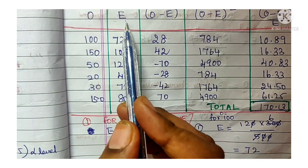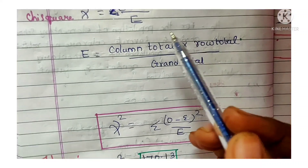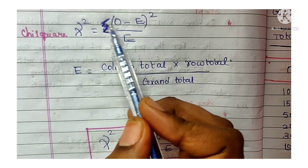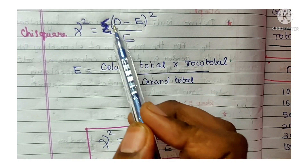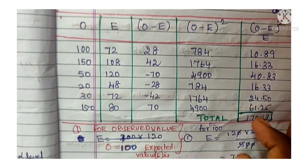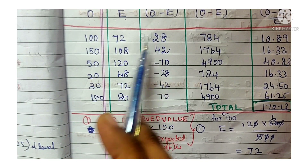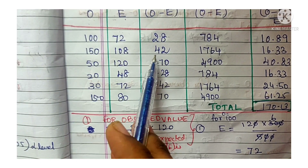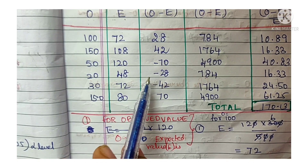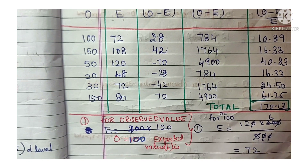Now we calculate O − E for each pair: 100 − 72 = 28; 150 − 108 = 42; 50 − 120 = −70; 20 − 48 = −28; 30 − 72 = −42; 150 − 80 = 70.